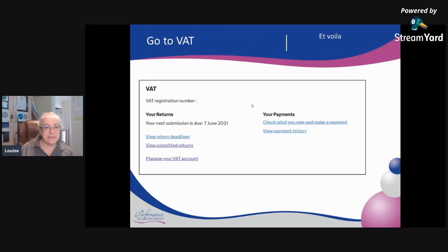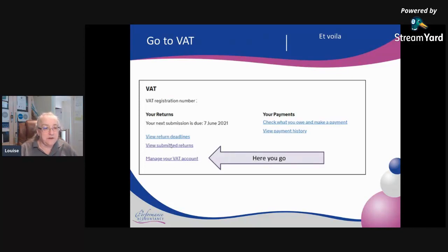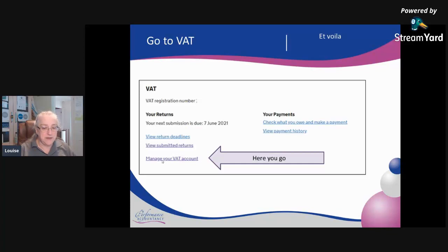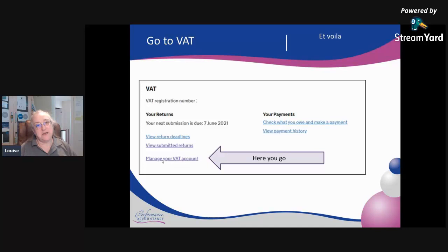If I scroll down slightly I will get to the section that says VAT, and what I want to do is click on 'Manage your VAT account'. I am set up with Making Tax Digital for VAT, so this is what it should look like if you have MTD set up. If you don't have MTD set up, this may look slightly different, but eventually all businesses will have to go to MTD for VAT.